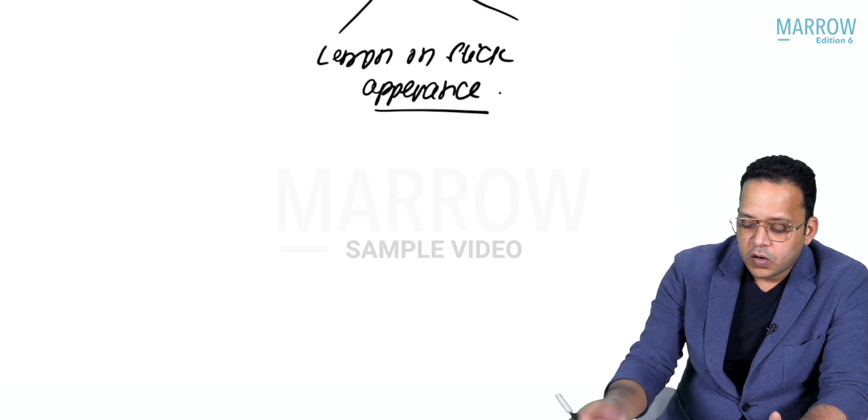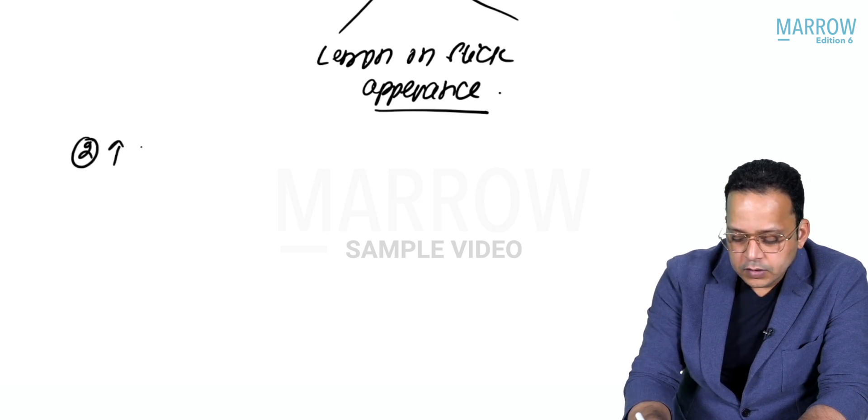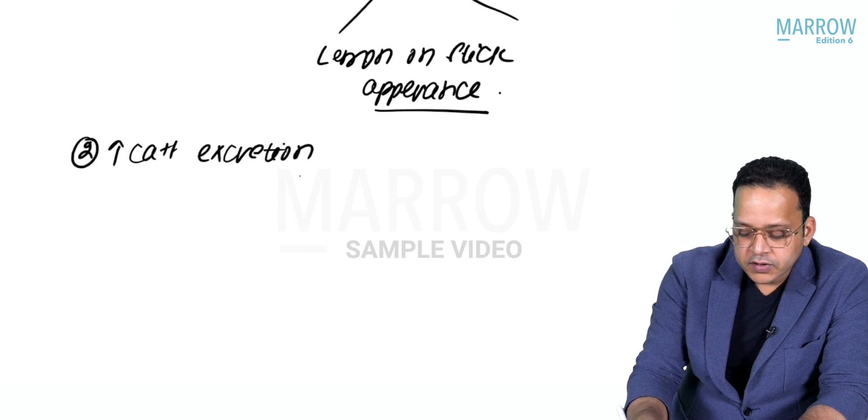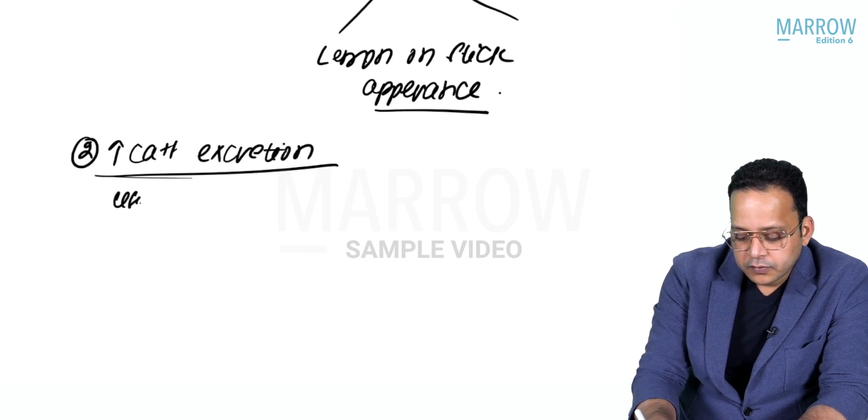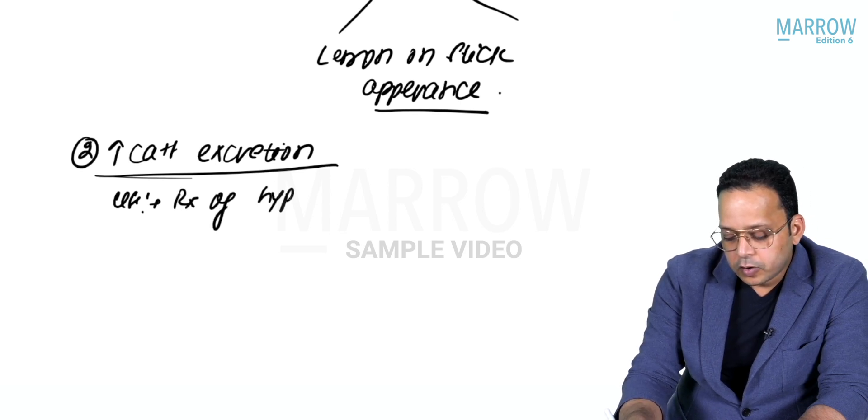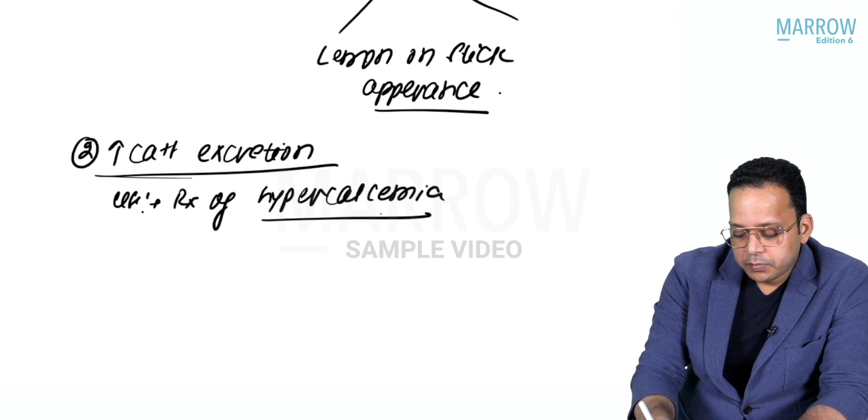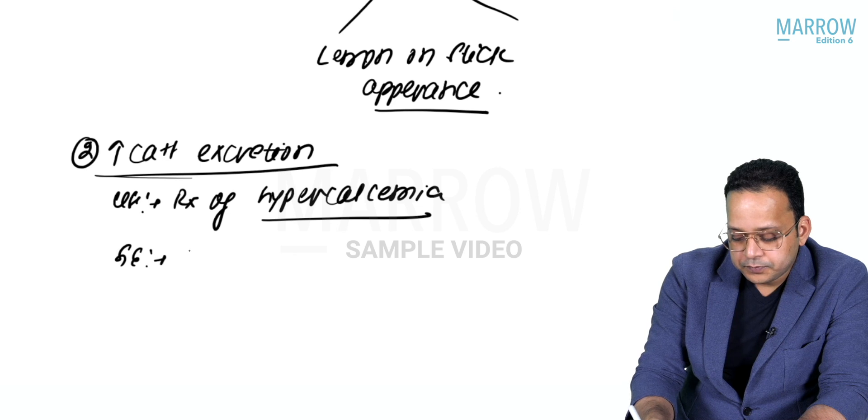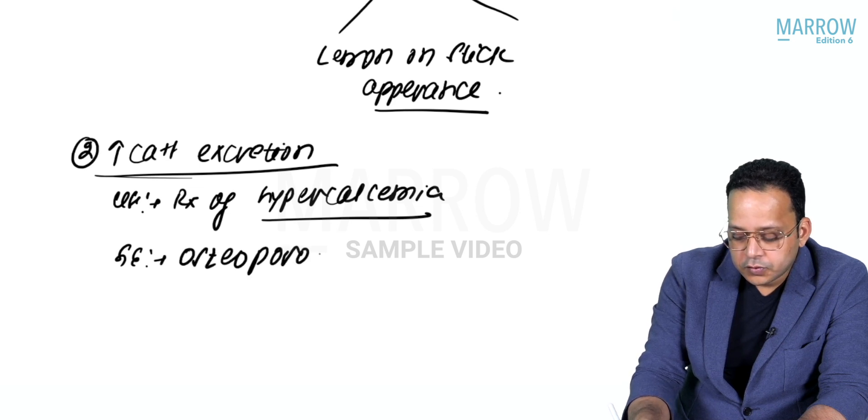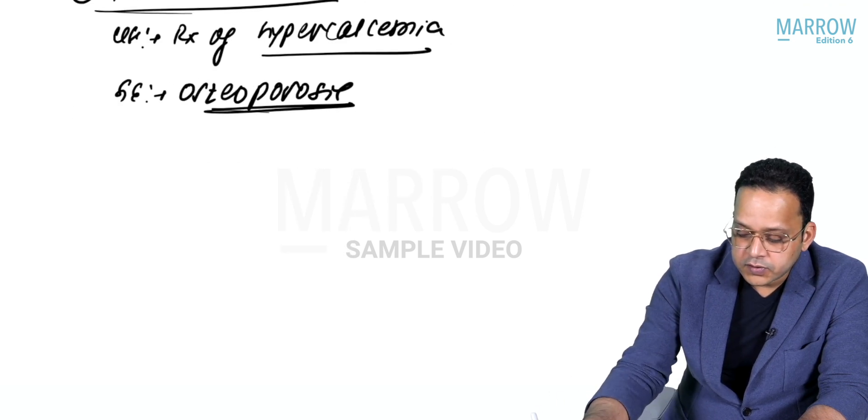Second, steroids can increase calcium excretion and can be used for treatment of hypercalcemia. But use of steroids can cause osteoporosis because of decreased calcium.